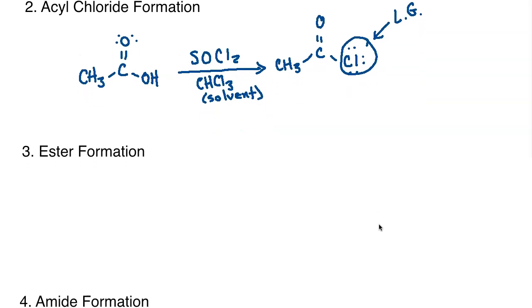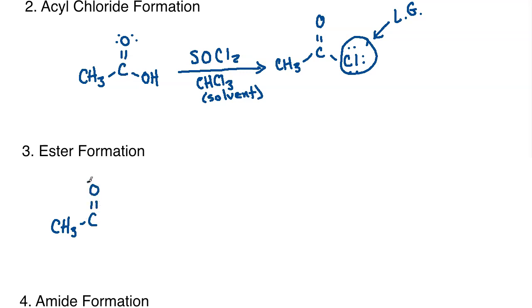Speaking of esters, it is possible to do an ester formation from a carboxylic acid. So what you would do is you are actually going to undertake the very first step that we talked about at the beginning of this lecture, which is a deprotonation step. Okay, so if I subject the carboxylic acid to a base first, that will deprotonate it and put it into that O minus form.